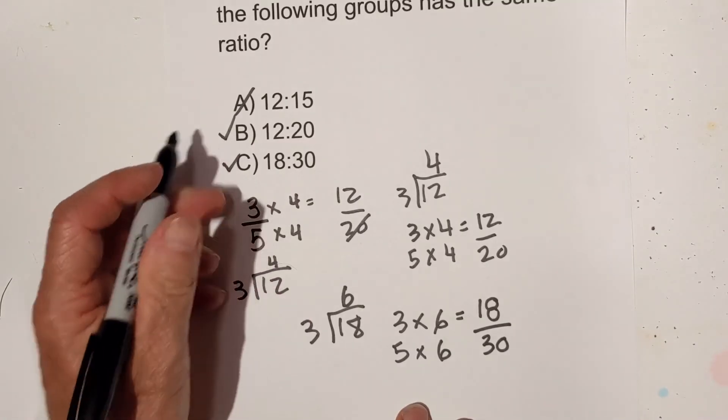Now we need to see if C is correct. Okay so now I'm going to work C. And here we go with C. We have 18 divided by 3 which is 6. Okay 3 times 6 and 5 times 6 equals 18 and that is 30. So this is correct also. So both the ratios 12:20 and 18:30 are equivalent to 3 over 5 or 3 to 5.